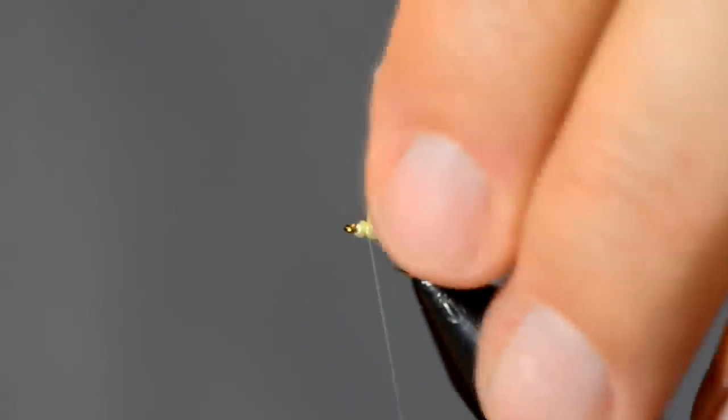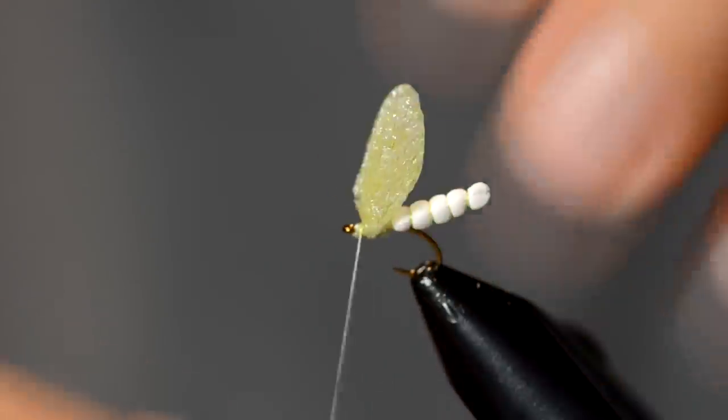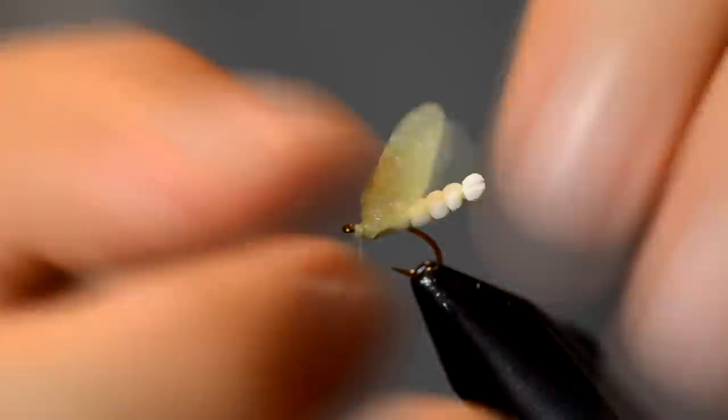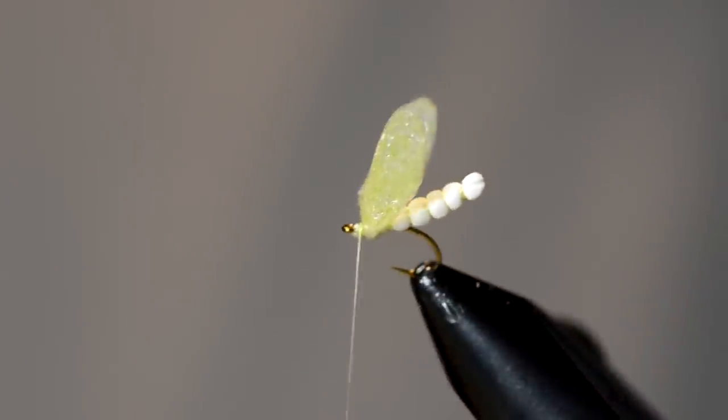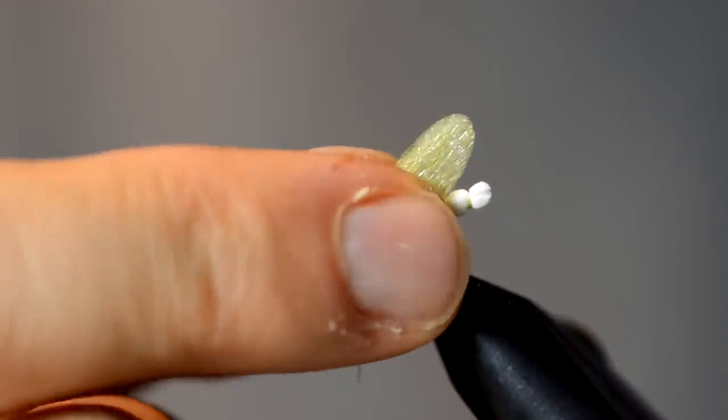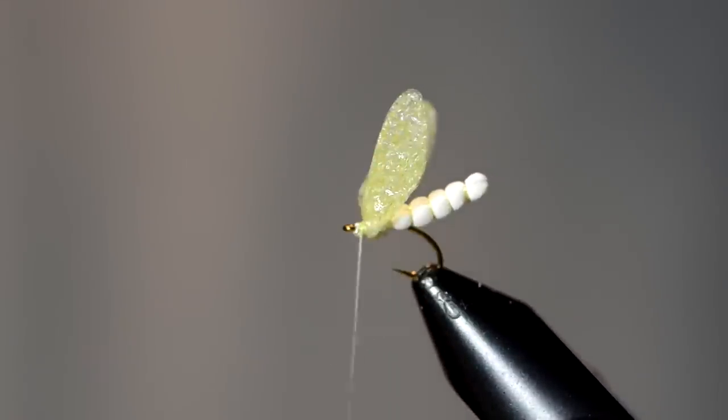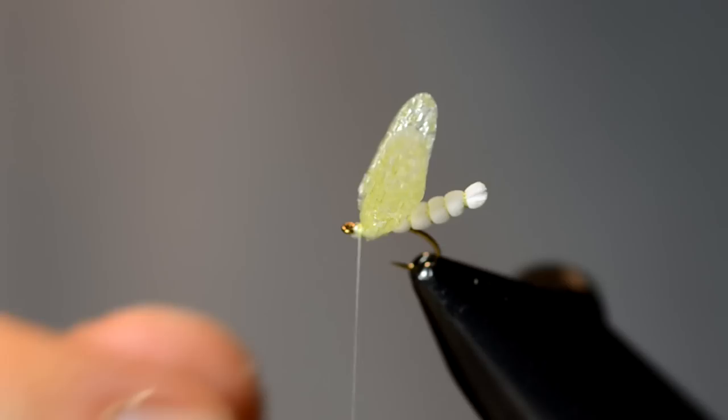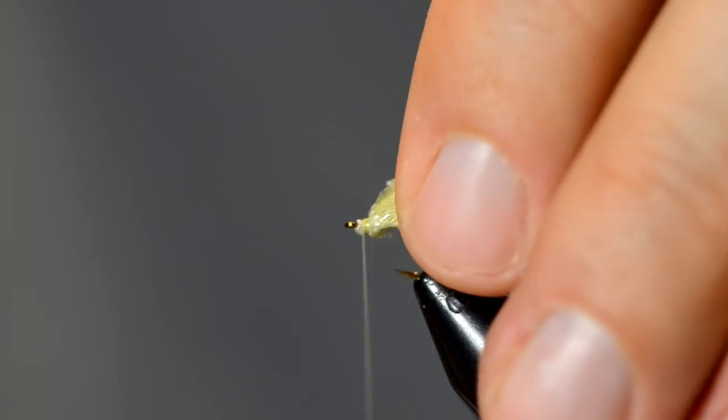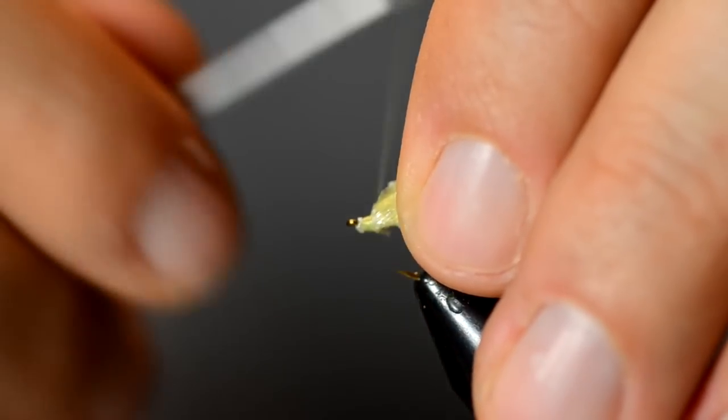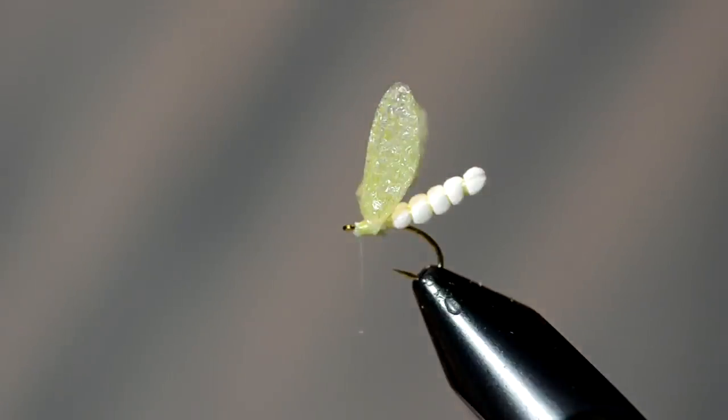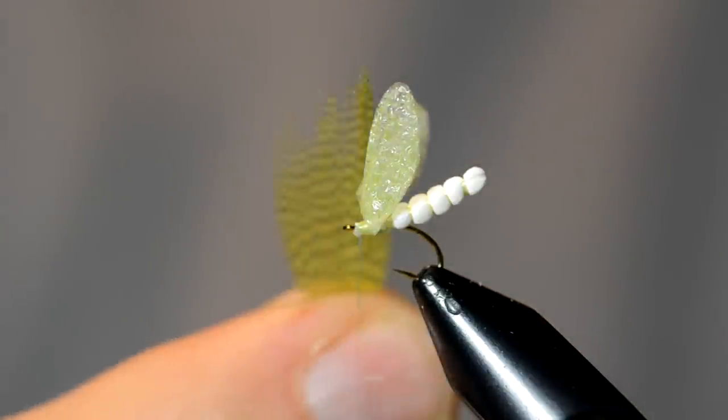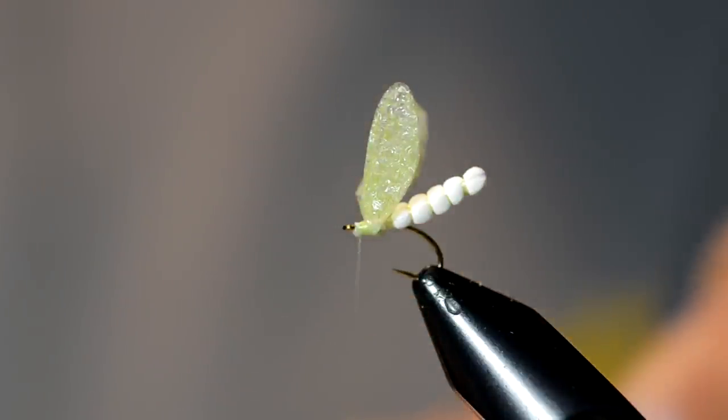That will secure them. You want those wings actually set back at an angle, they're not straight up and down, so I like to make sure those are oriented right like so. Now I like to put some legs on, so I'm going to use some yellow dyed mallard flank.